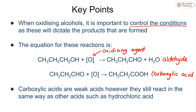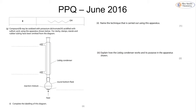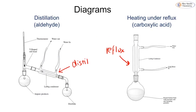We can also show going straight from alcohol to carboxylic acid, but must show two moles of oxidizing agent since the oxidation occurs twice. Carboxylic acids, while weak acids, still react in the same way as strong acids such as hydrochloric acid. Now let's look at a past paper question from the June 2016 paper, referring to compound E, which can be oxidized with potassium dichromate acidified with sulfuric acid using the reflux apparatus shown.